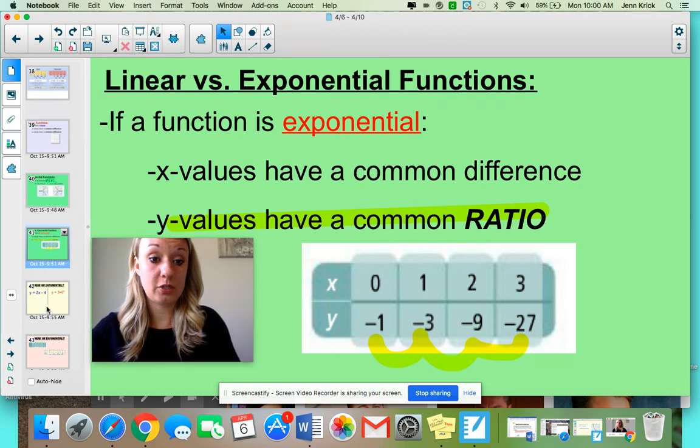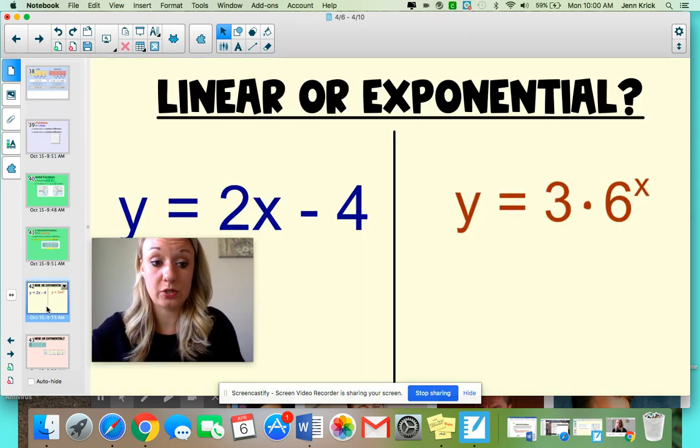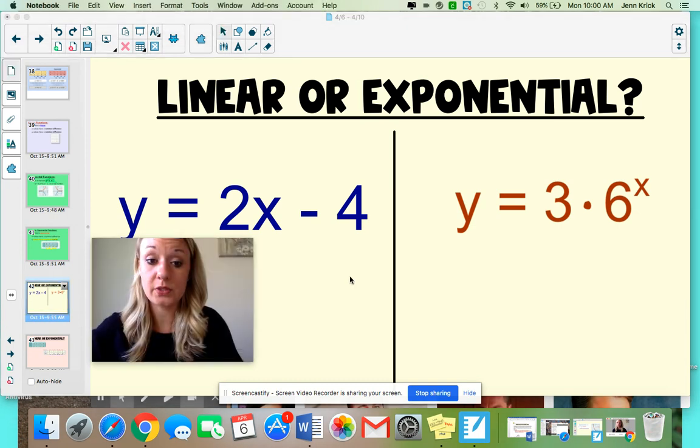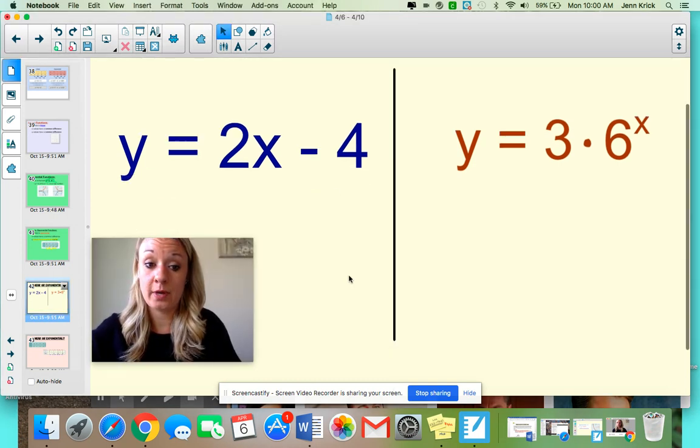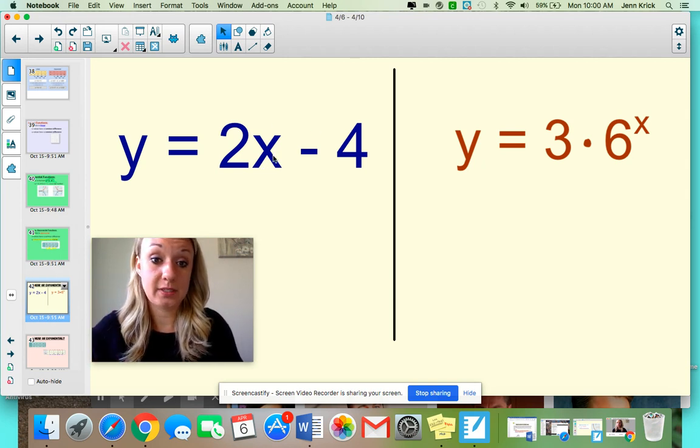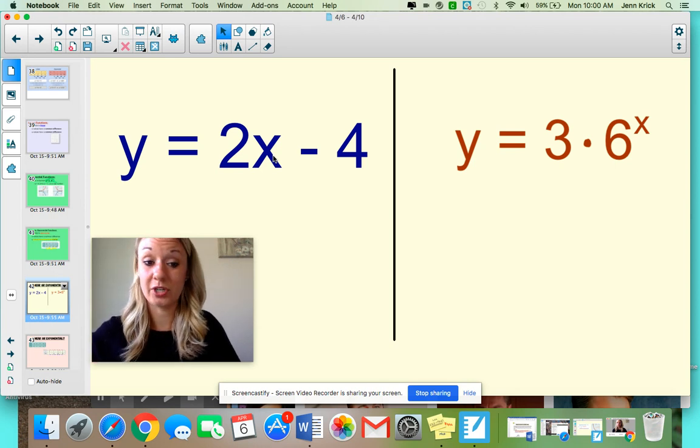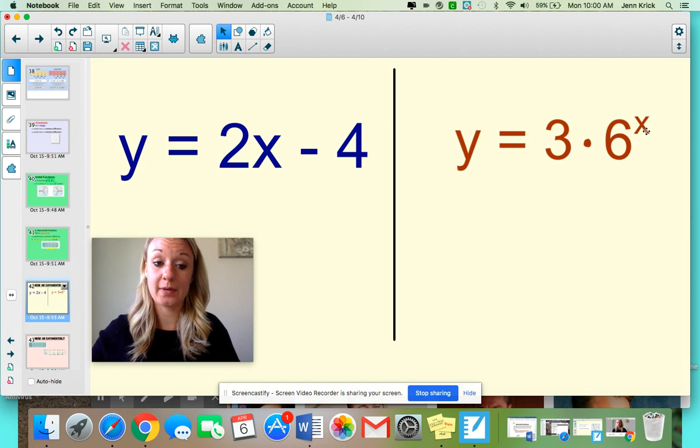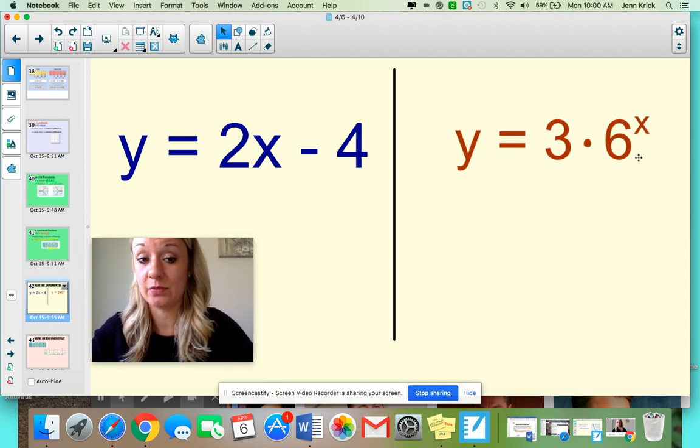So let's practice differentiating between the two. And it might be a good idea as I present you with two to kind of pause it and ask yourself. So if I gave you these two equations, I know that this one is going to be linear because it's in slope-intercept form. And if I graphed it, it'd be a straight line. I also don't see an exponent, which is my clue that it's going to be linear. This guy, as soon as you see this exponent, you know that it's going to be exponential. It's also in the exponential format where it's y equals a times b to the x. So linear, exponential.